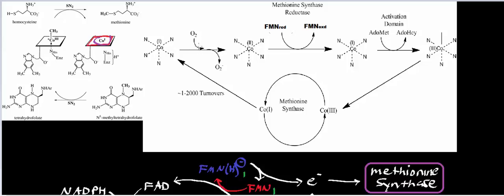What we said in the last video is we used this molecule called N5-methyl tetrahydrofolate. Notice that this molecule has a methyl group right here. What we talked about was that this methyl group is going to get transferred onto the cobalt cation in the one plus state.